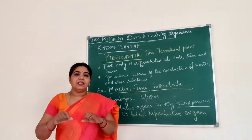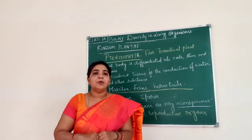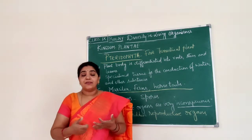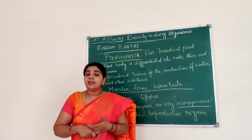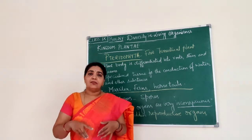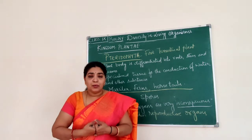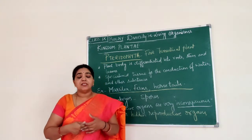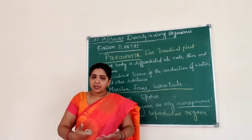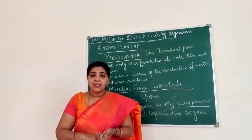So in all three types of plants we discussed whether they have a distinct stem or leaf, and whether they have vascular tissues. We also discussed how they reproduce. In algae, you can see vegetative propagation — that is asexual reproduction. Fragmentation, where you break it into pieces and it becomes a new organism, is also seen in algae as well as in bryophytes.